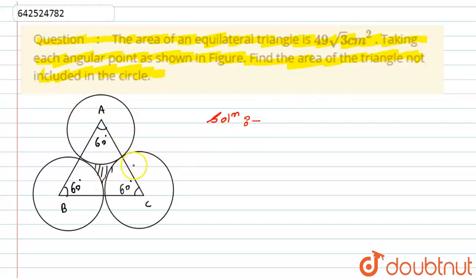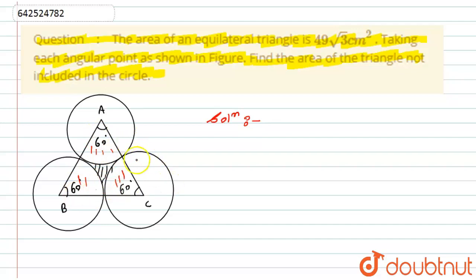The question asks us to find the area of the triangle not included in the circles — that is, the shaded region. The approach is: calculate the area of the three sectors (one at each vertex) and subtract them from the area of the triangle to get the shaded area.